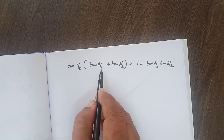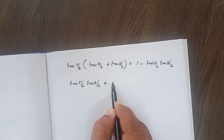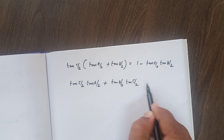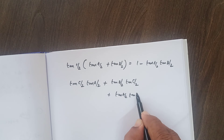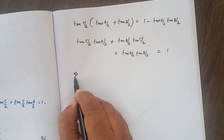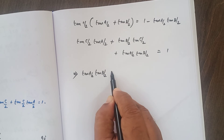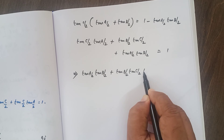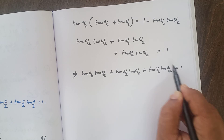Expanding by normal multiplication: tan(C/2)·tan(A/2) plus tan(C/2)·tan(B/2) — or tan(B/2)·tan(C/2), same thing — equals 1 minus tan(A/2)·tan(B/2). Bringing terms to the left hand side: tan(A/2)·tan(B/2) plus tan(B/2)·tan(C/2) plus tan(C/2)·tan(A/2) equals 1.